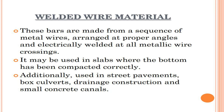Welded wire material: these bars are made from a sequence of metal wires arranged at proper angles and electrically welded at all wire crossings. They may be used in slabs where the base has been compacted correctly. Additionally, they are used in street pavements, box culverts, drainage construction, and small concrete canals.